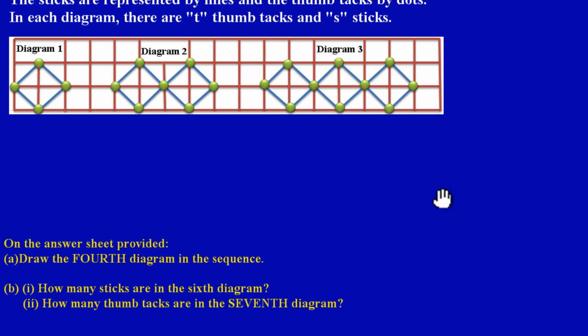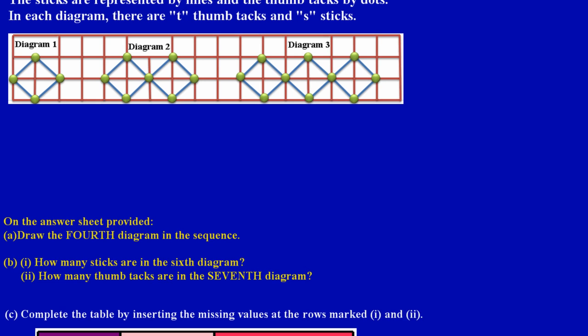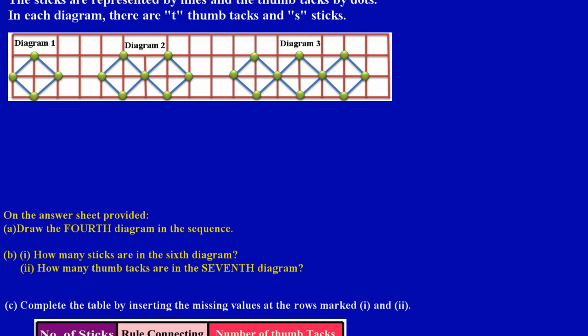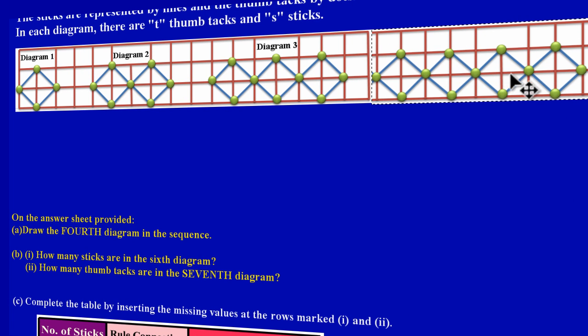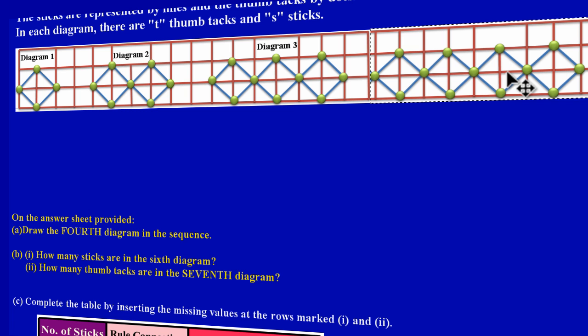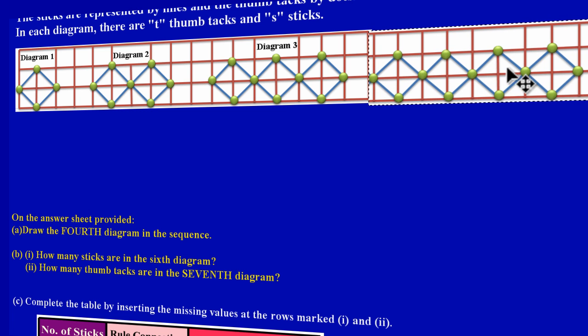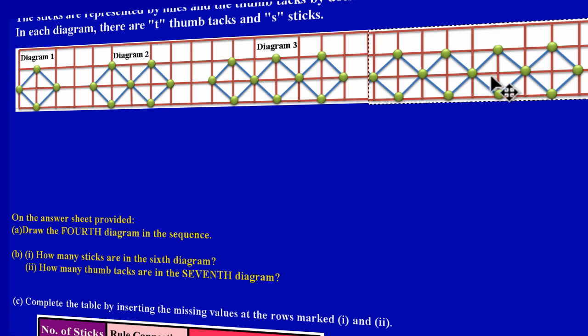So here we have our four diagrams. I'm just going to add that right here. It really makes sense because the third diagram had twelve sticks—three fours—and the fourth diagram, obviously since we are going up by four, would have sixteen sticks.